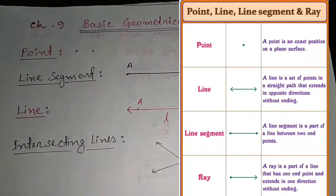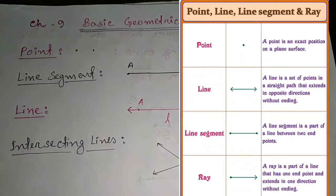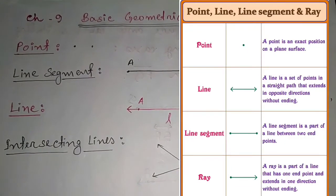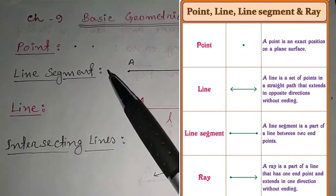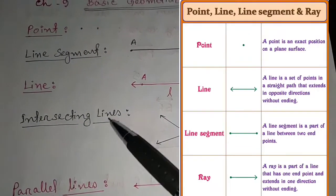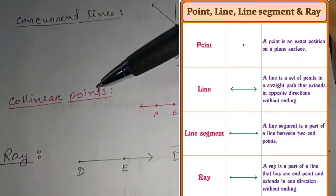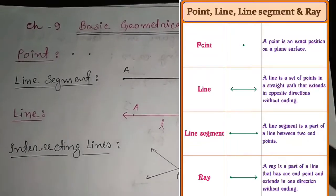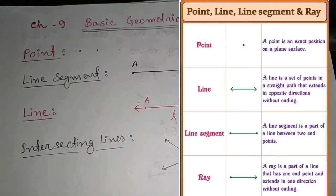Hello students, today I'm going to start Chapter 9: Basic Geometrical Ideas. Before that, you have to know some very basic and important things like what is a point, line segment, line, intersecting line, parallel lines, concurrent lines, collinear points, ray, etc. I'm going to explain them one by one.